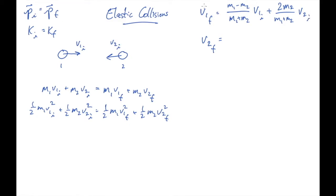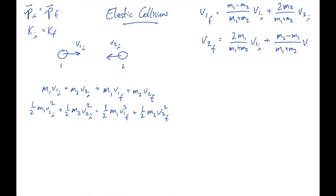This is the general result. If you have a one-dimensional elastic head-on collision and you know the initial velocities, you can use these two equations to find the final velocities. Let's spend some time, though, talking about something more interesting — a couple of lines of algebra to get us to a nice, useful, insightful result.